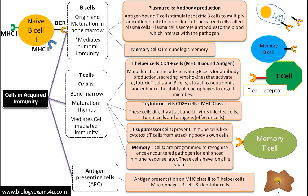The major cells involved in acquired immunity are B cells, T cells, and antigen presenting cells, including macrophages and dendritic cells. These cells are also involved in innate immunity — there is a crosstalk between both systems, innate immunity and acquired immunity. Thanks for your attention. You are with biologyexamsforyou.com.